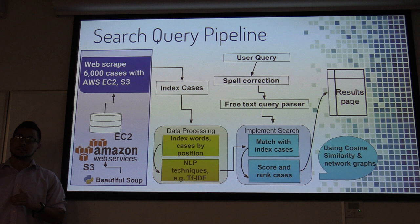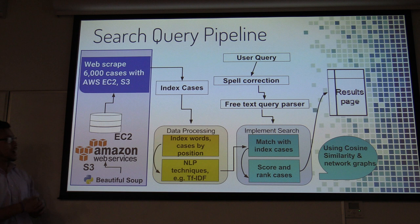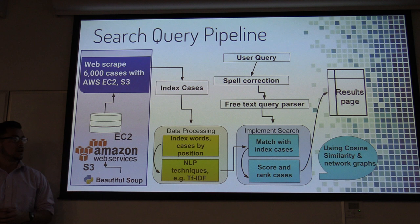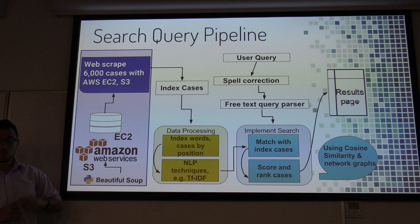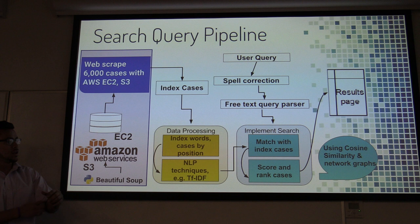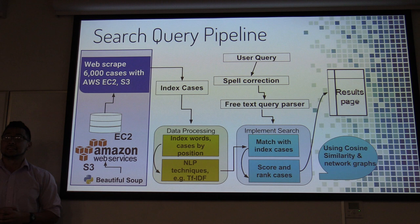The most important parts of the pipeline: I used Python to scrape about 6,000 cases, indexed them, and applied natural language techniques. When the user inputs a query, everything has already been processed. There's a spell correction step, a parser that parses the query, and a function that implements the actual search — this is where all the secret sauce comes in, where search terms get matched, scored, ranked, and results come out.